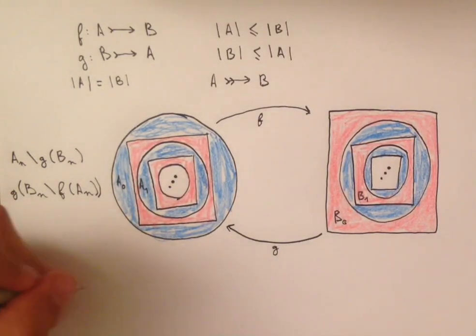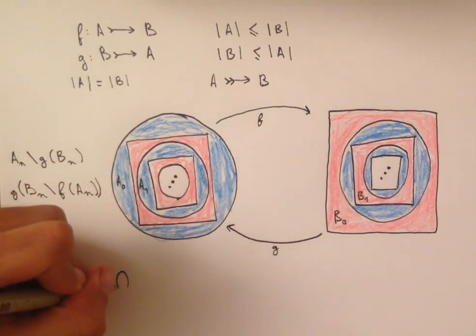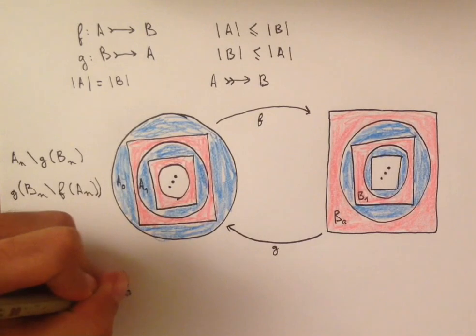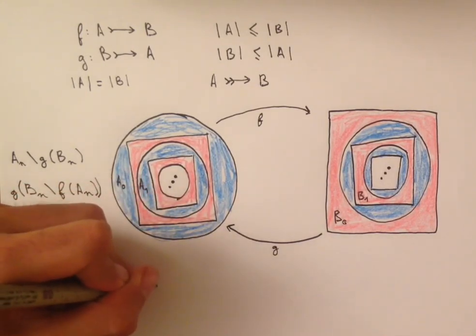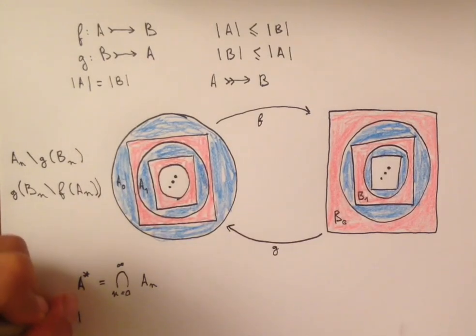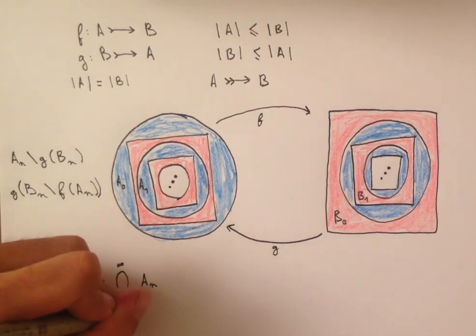And so what's left are A star, which is equal to the intersection as N goes from 0 to infinity of all AN. And B star, which similarly is equal to the intersection as N goes from 0 to infinity of all BN.